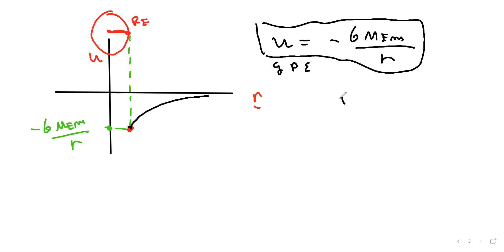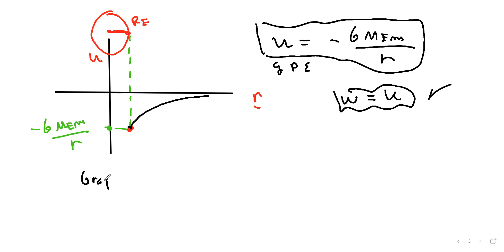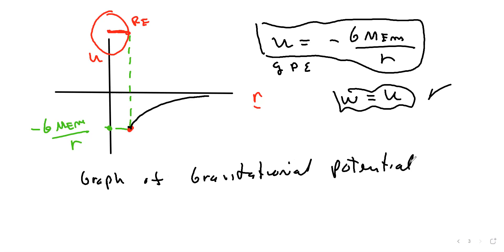Remember that the work done equals the change in potential energy. This is the graph of gravitational potential energy. We'll do a bunch of problems using this formula — see you next time.